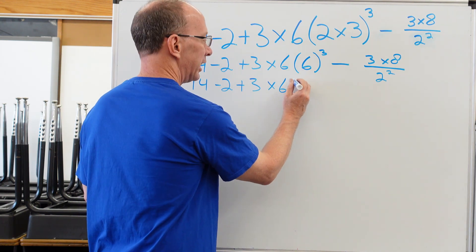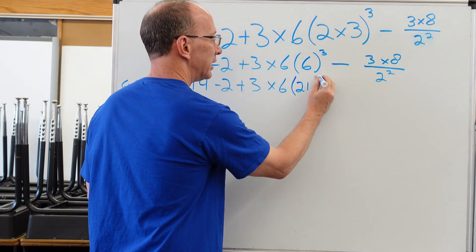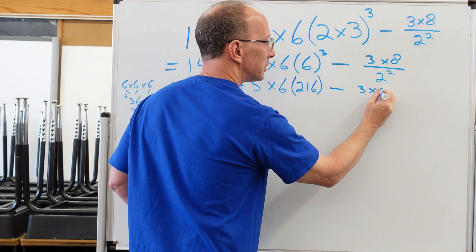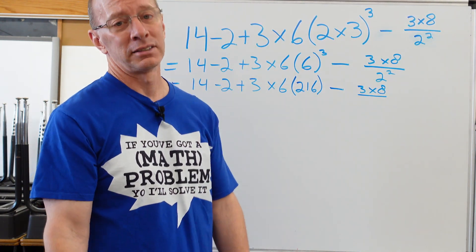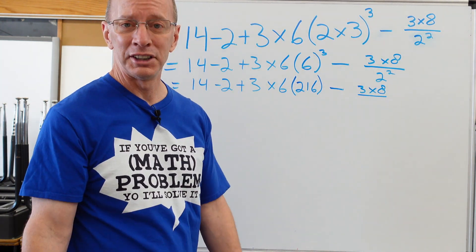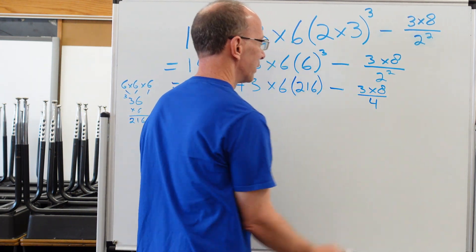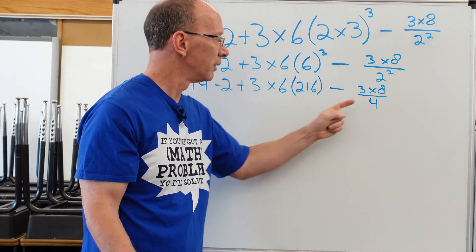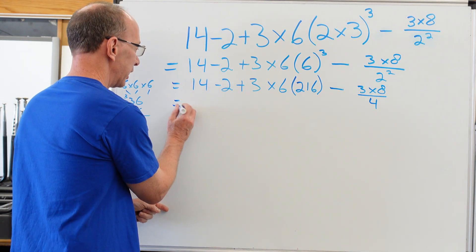So we're going to put in parentheses right here, 216 minus three times eight over two to the second power. That's a lot easier one than the one we just figured out. So two to the second power would be four. All right. Now we still have some multiplication to do here. We just finished our exponents.